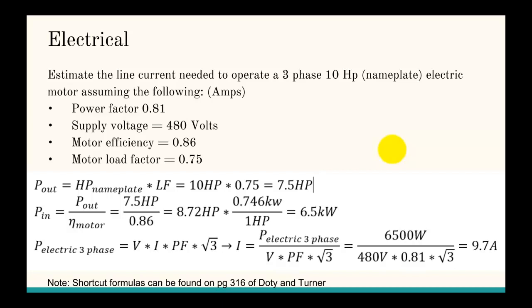So, in this case, we're estimating the line current, or the amps, needed to operate a three-phase 10 horsepower nameplate electric motor. We're going to assume the following: a power factor of 0.81, a supply voltage of 480 volts, a motor efficiency of 0.86, and a motor load factor of 0.75.